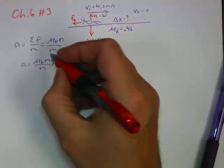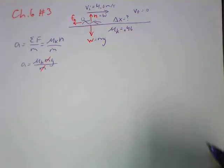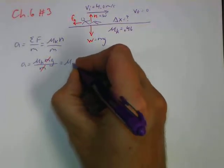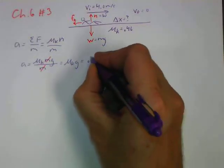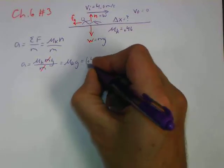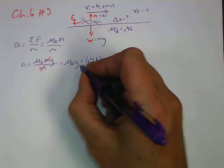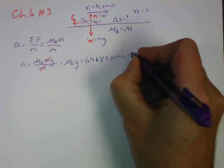And notice that we don't need the mass of the player, which is really good because they didn't give it to us. So his acceleration is equal to the coefficient of kinetic friction multiplied by g. So that's going to be 0.46, just a ratio, basically the same. It's 46% of the acceleration from gravity. 9.81 meters per second squared.